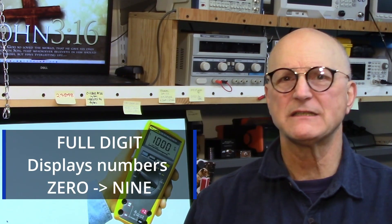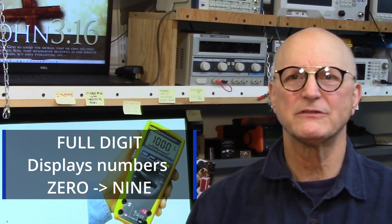What on earth do they mean by a three and a half digit or three and three quarter digit display? A full digit is defined as a decimal digit that will display numbers from zero to nine. So the three portion of this means that they have three digits that can display numbers from zero to nine. So what about the half part?